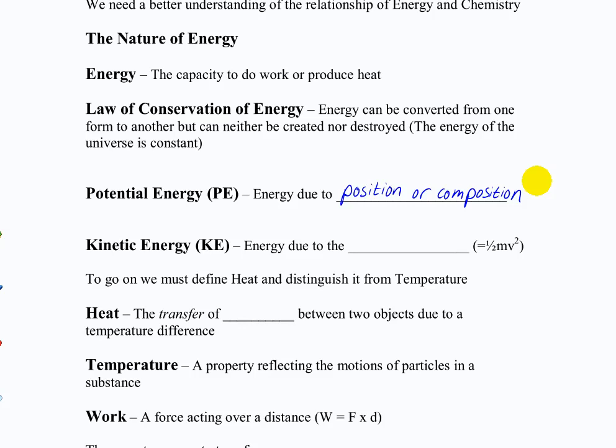So we have two types of energy that we consider. The potential energy, which is energy due to position or composition. And then kinetic energy is due to the motion of a body. We talked about that a little bit in the last chapter. It's equal to one-half mv squared.